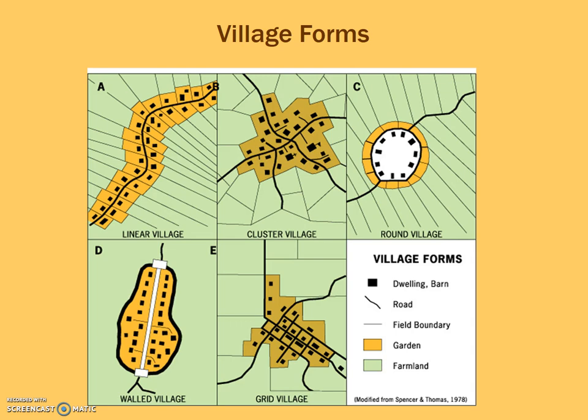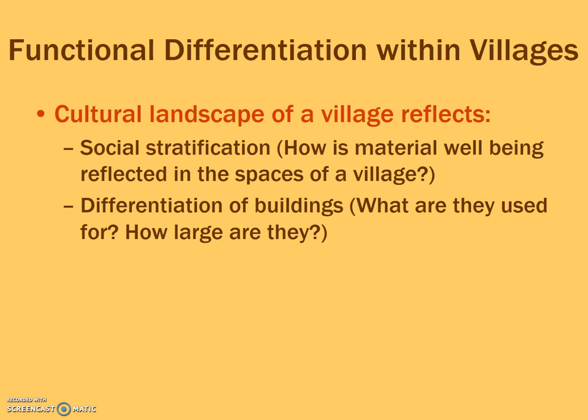The last type is the dispersed settlement pattern. This is what you find more in the Great Plains of the United States, where you have a farmhouse and a barn, then a long stretch of acres they can farm, and then you find another house and barn with lots of acres of farmland. You don't find this as much in other countries where the population may be much higher and there's not as much land to farm on.